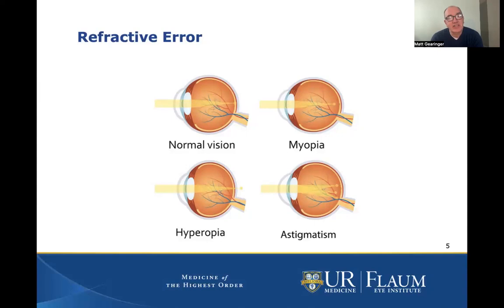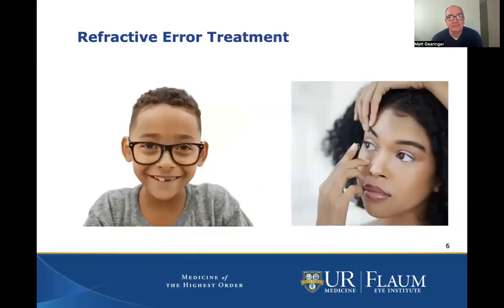Most kids are actually hyperopic or farsighted, and they can focus okay to see well during the day, but sometimes you can have visual fatigue with prolonged focus if they are very farsighted. Astigmatism causes blur at all distances — I usually describe it as a kind of warp to the focus of the eyes.